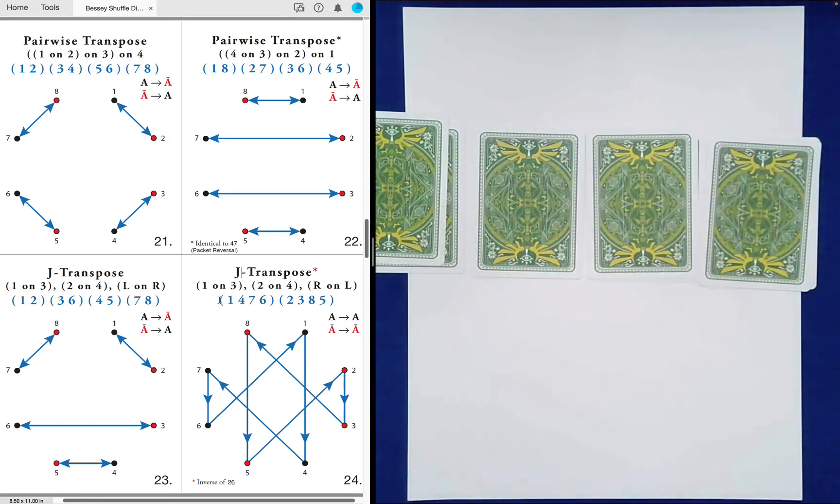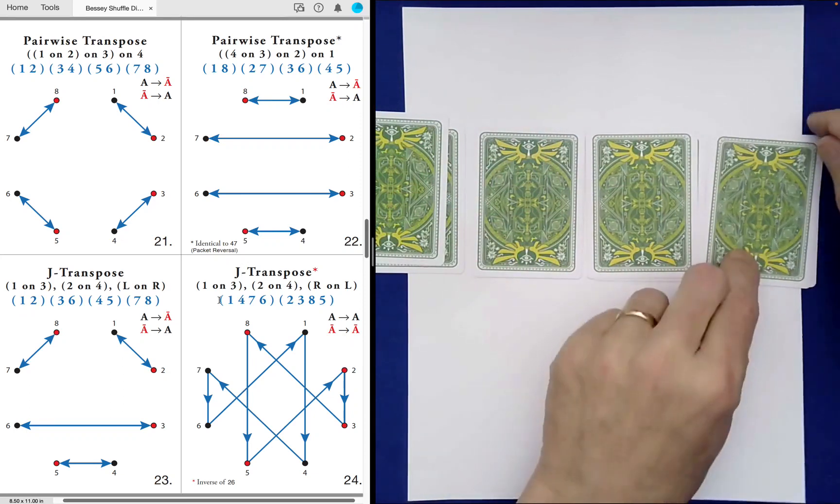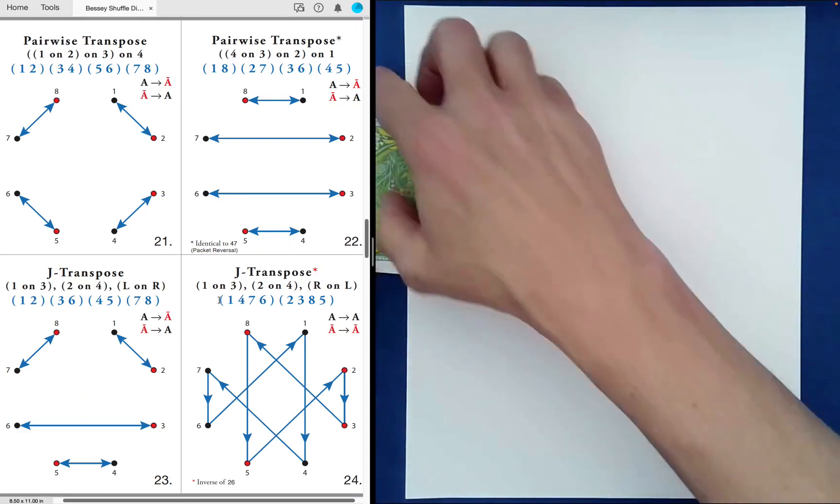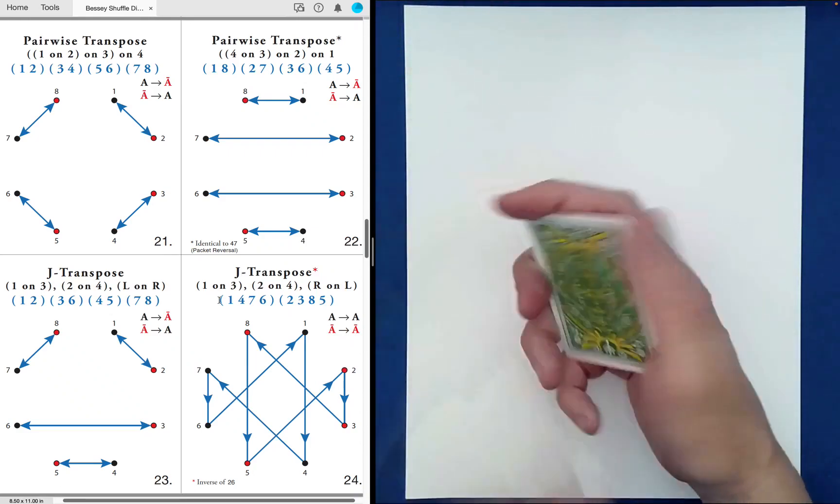So what's the stacking now for shuffle 22? It's stacking from right to left. So if you look at the notation there, it's just a way of describing stacking these piles from right to left.